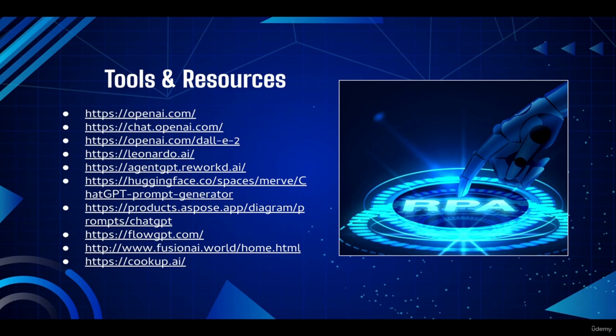Welcome back to the course. In this video I'm going to provide you with a list of tools and resources we're going to be utilizing in this course. There are four main tools: the first one is openai.com, the second is ChatGPT, the third is DALL-E, and the fourth is Leonardo AI.